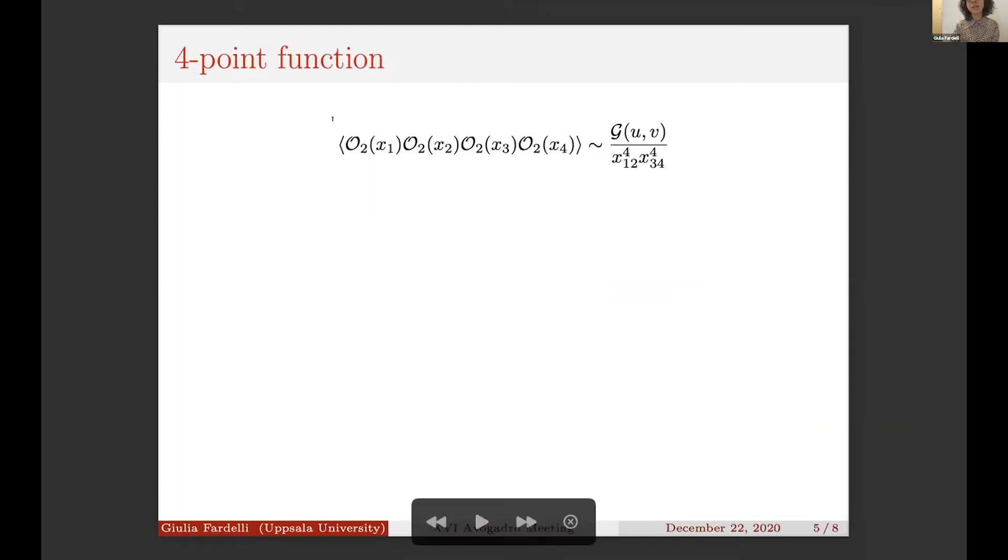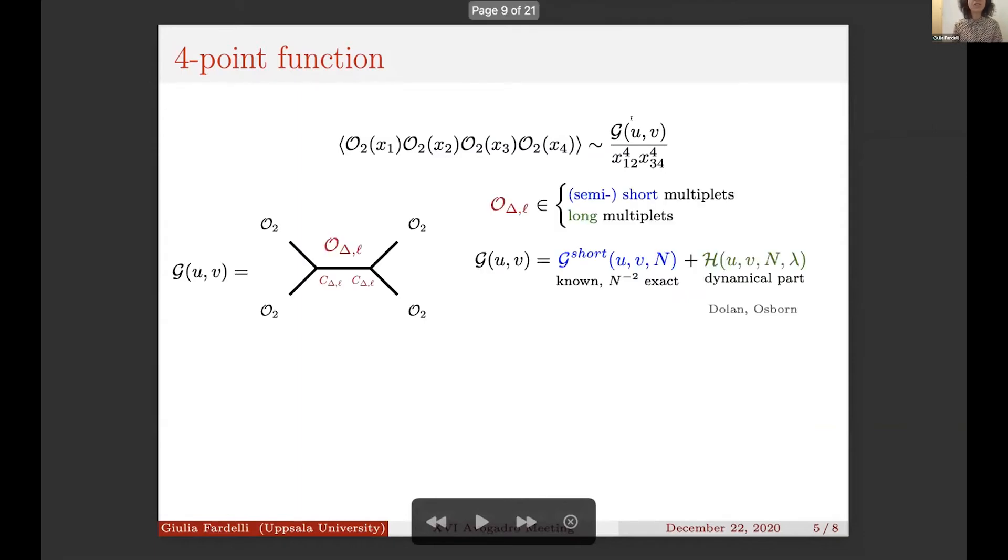Let's start from the four-point function. We are considering the four-point function of identical O2 operators. Thanks to superconformal symmetry, this can be expressed as one function G which depends on these two cross ratios u and v.